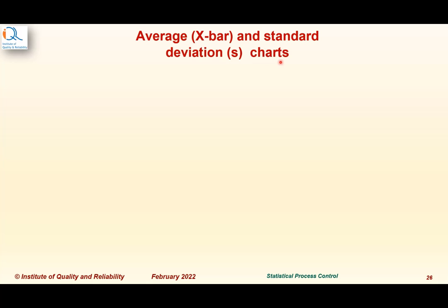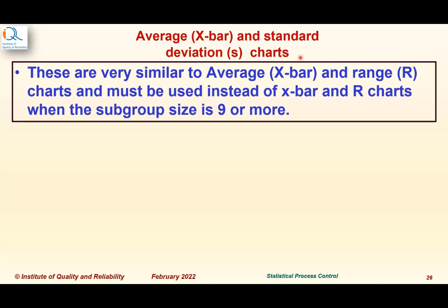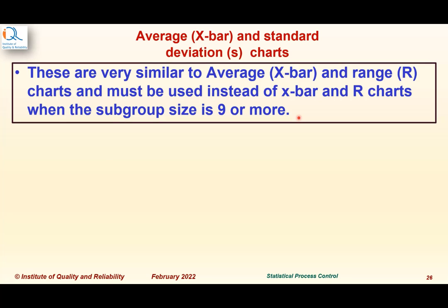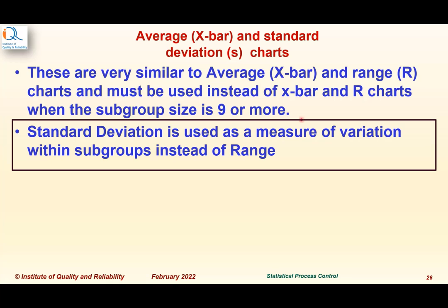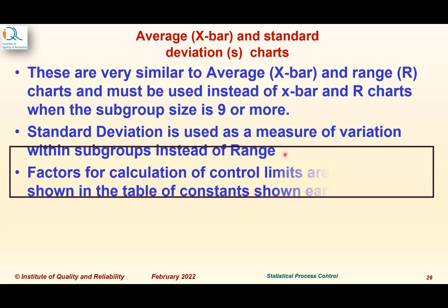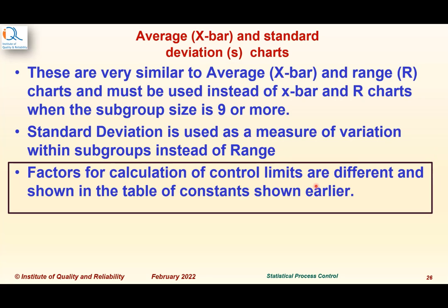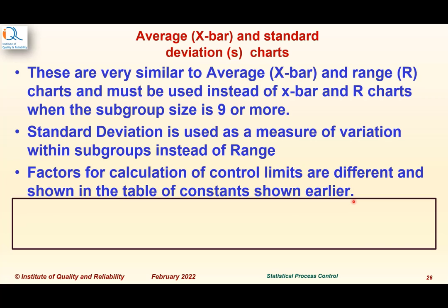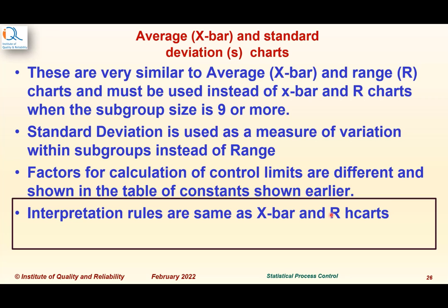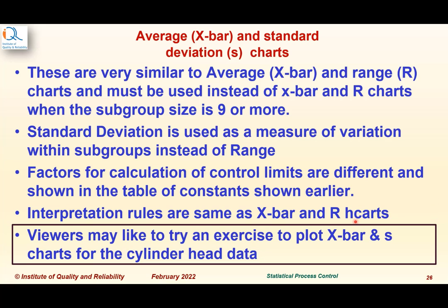X-bar and standard deviation charts are very similar to average and range charts and must be used instead of X-bar and range charts when the subgroup size is 9 or more, because for larger subgroup sizes, range is not an appropriate measure of variation. Standard deviation is used as the measure of within-subgroup variation instead of range. Factors for calculation of control limits are different and shown in the table of constants from the earlier Excel exercise. Interpretation rules are the same as for X-bar and range charts. Viewers may like to try plotting X-bar and S charts for the cylinder head data shown in the Excel example.